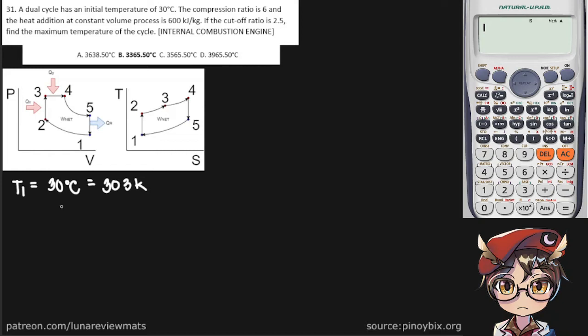The compression ratio is equal to V1 over V2 and it's given as 6.